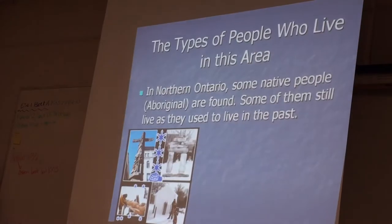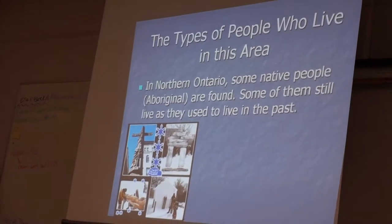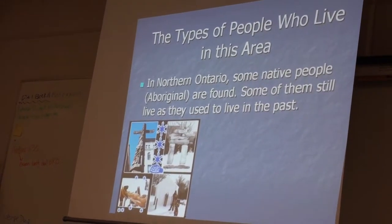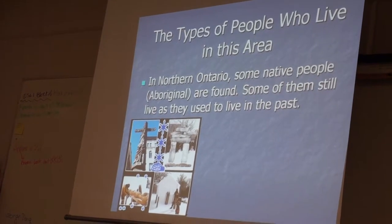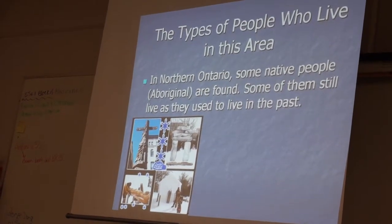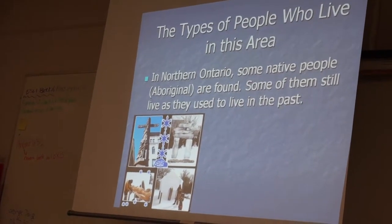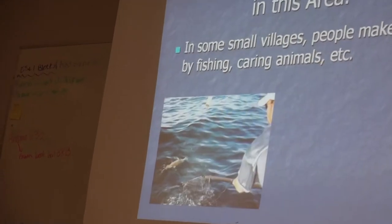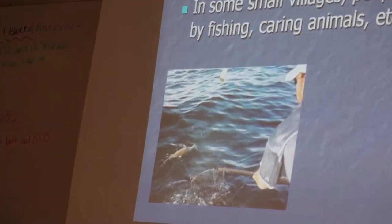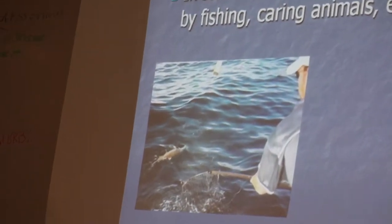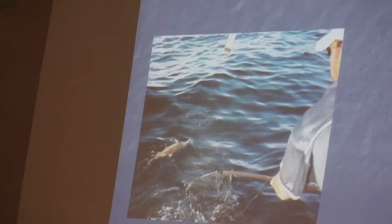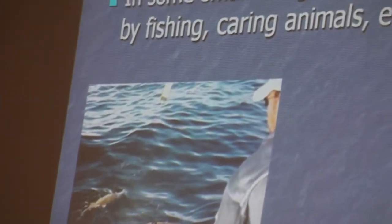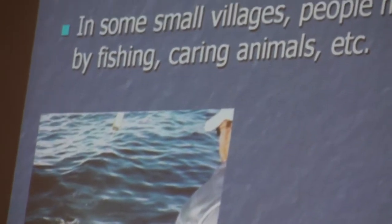In Ontario we can also find some First Nations population called Aboriginal. People in small villages make a living by fishing and carrying animals, with very little technology.